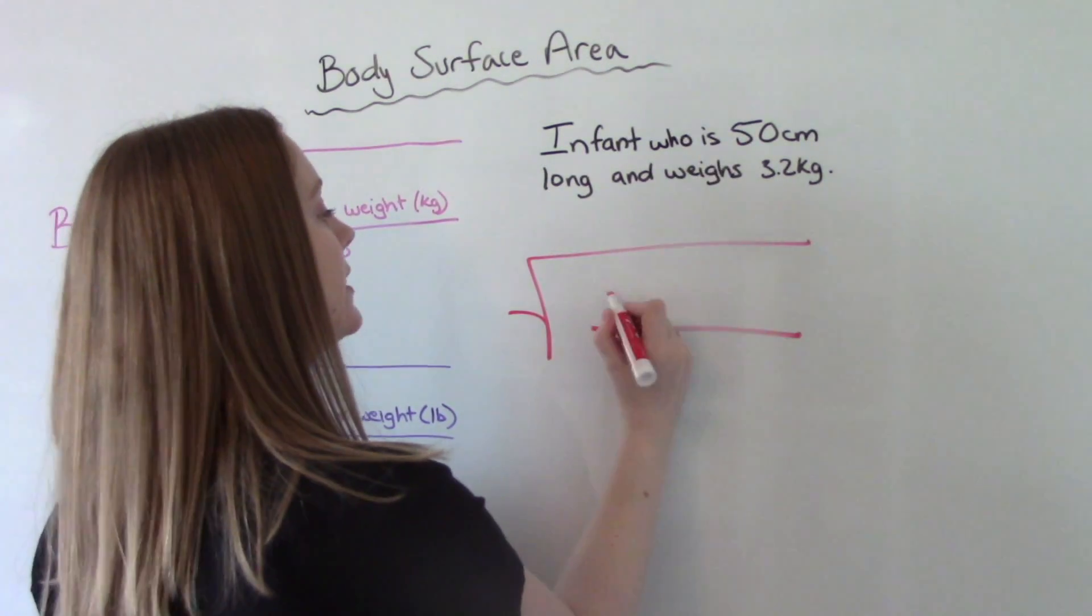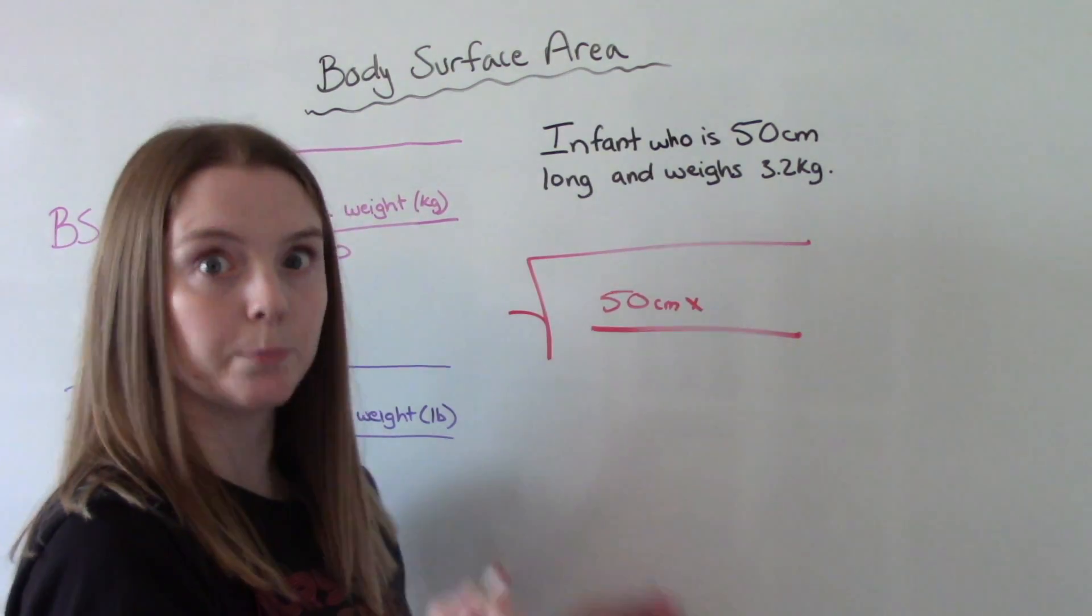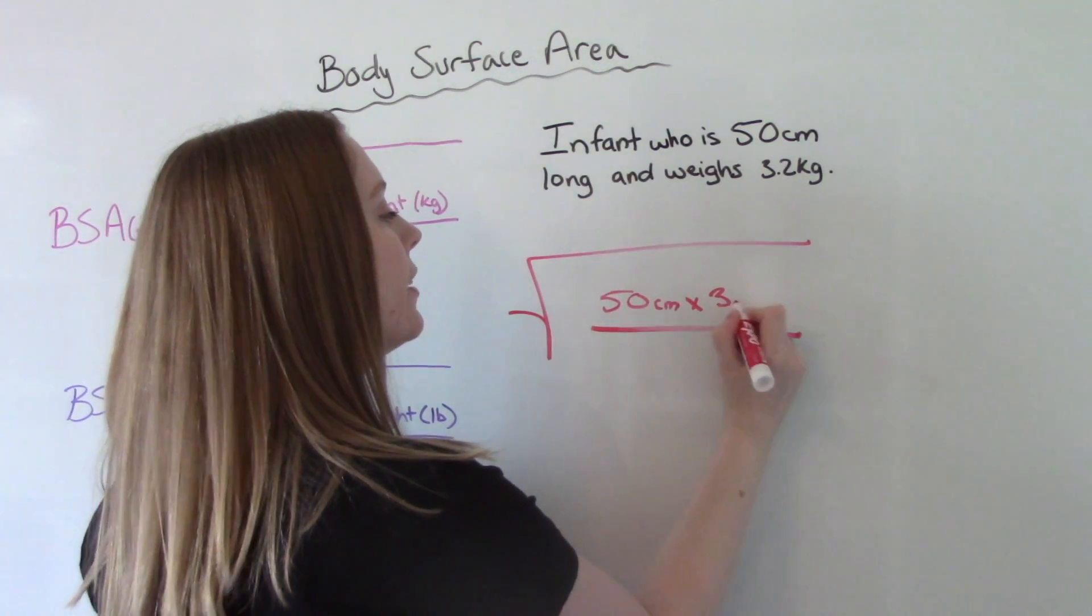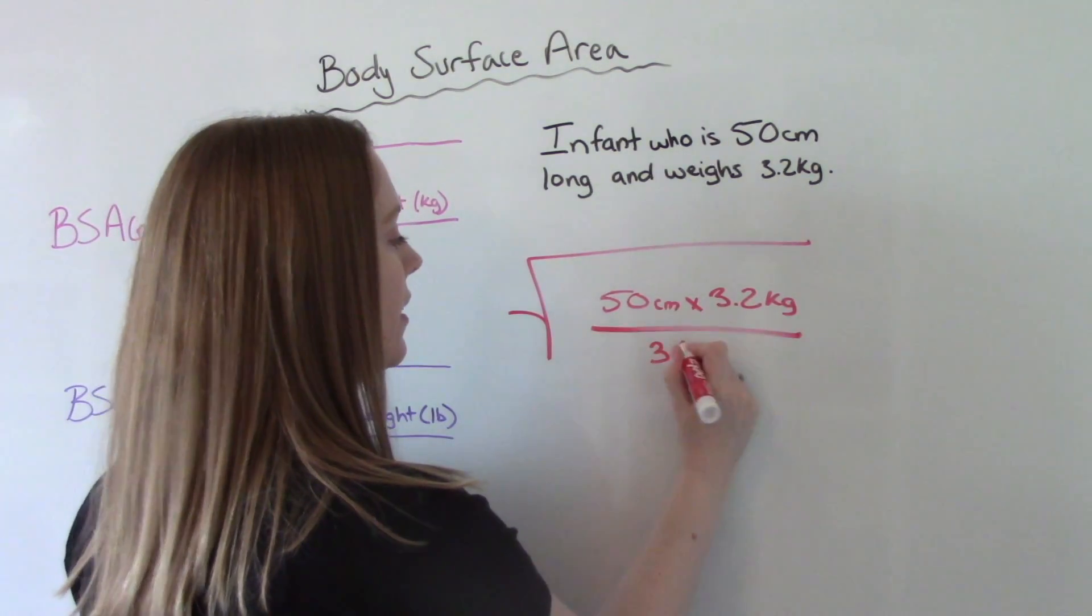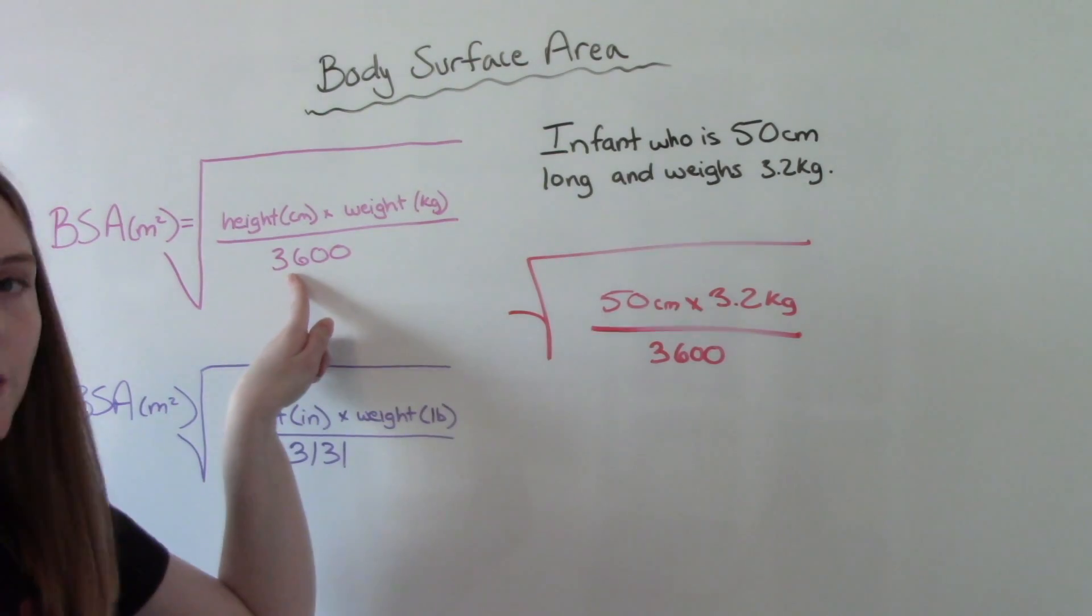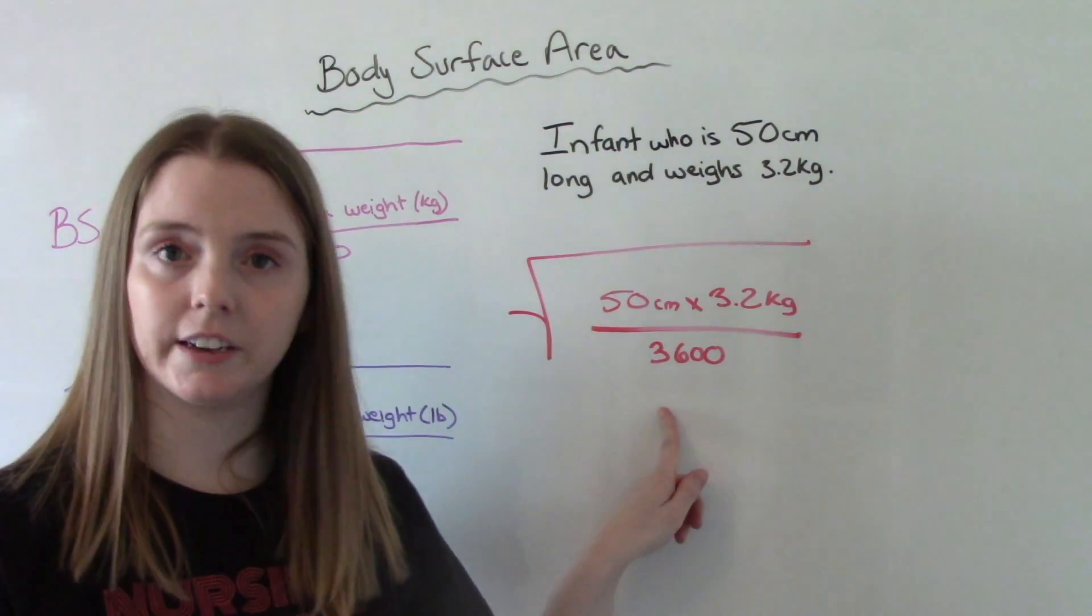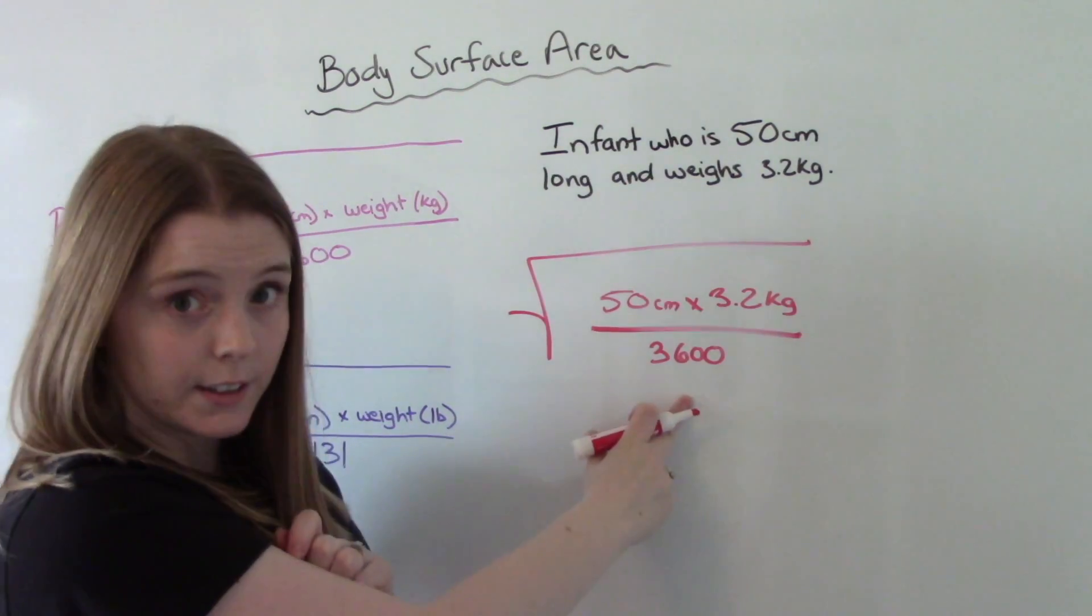So 50 centimeters times 3.2 kilograms divided by 3,600. So this value is part of this formula. This is not going to change. It doesn't matter what values we have here. This is always going to be 3,600.